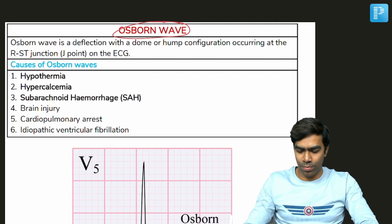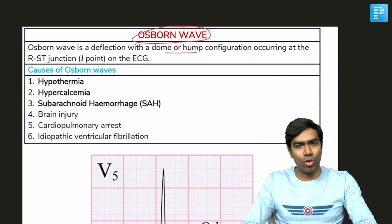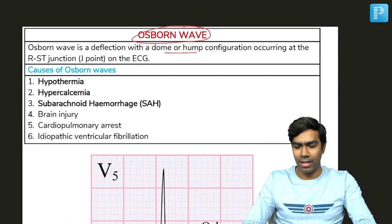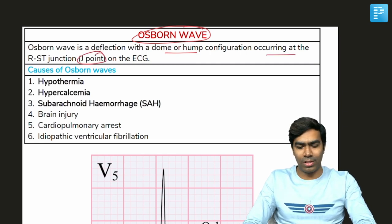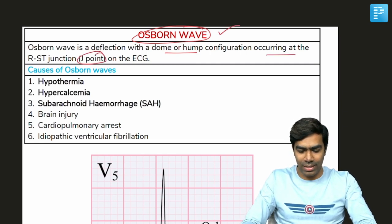What is Osborn wave? Osborn wave is a deflection with a dome or hump-like configuration occurring at the J point. So it is a kind of a J wave in the ECG.